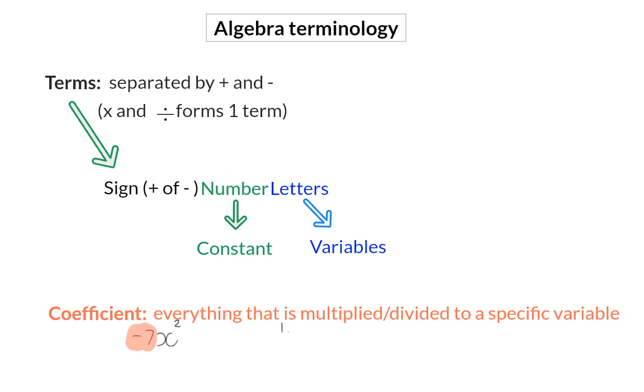Or, if we have a look at a term like a half xy, and I ask you for the coefficient of y, then it is everything that is multiplied to y, which will be a half times x. Also note that this can be written as x times y over 2. And here, the coefficient is still x over 2, or a half times x.